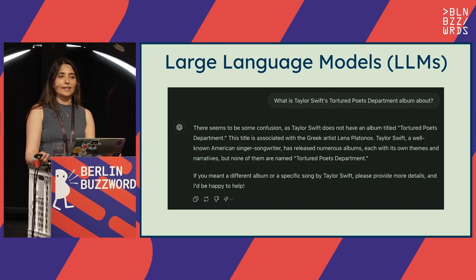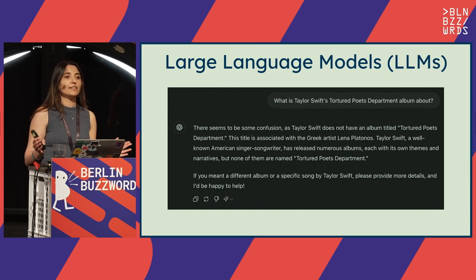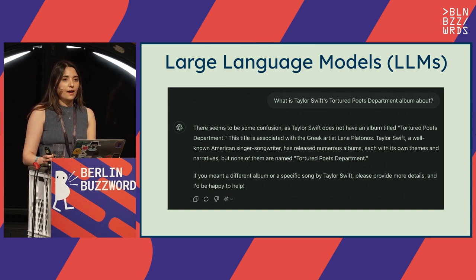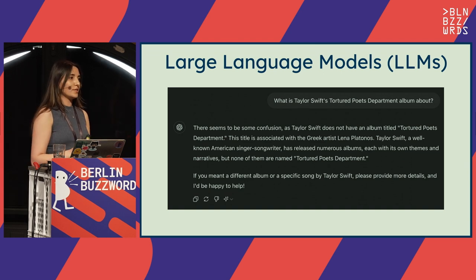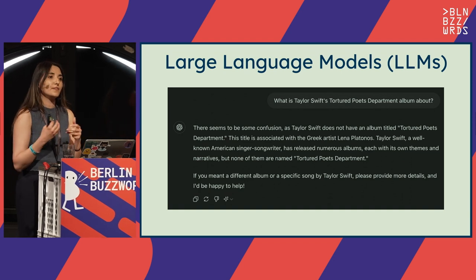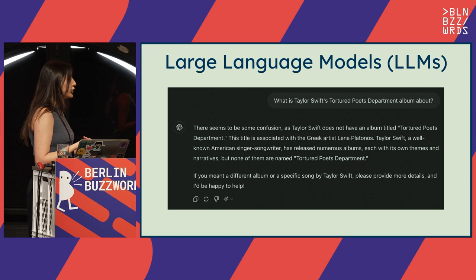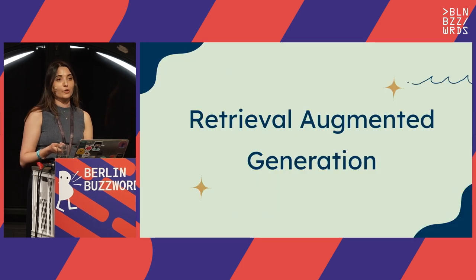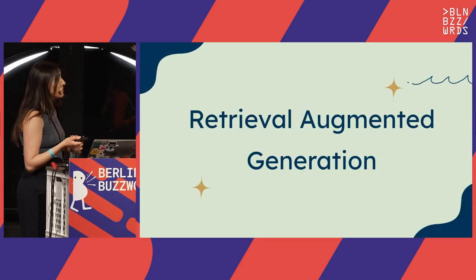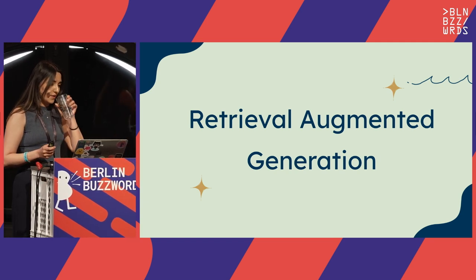But does it mean that I cannot use these models on data that wasn't in their training data? Well, the answer is no — I can definitely use large language models to answer questions even if the information wasn't in their training data. And the way to do that is called retrieval augmented generation. It's a very simple yet very effective method.